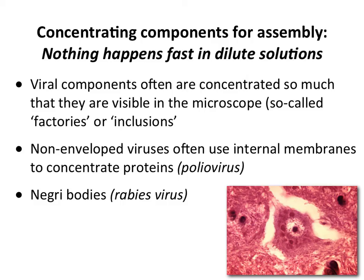Here on the lower right is an example of such an inclusion body — a neuron from an individual unfortunately infected with rabies virus. The cytoplasm of this cell has very distinct round structures; these are factories where rabies virions are being assembled. You want to concentrate all the components in one place so reactions go faster. In many cases these inclusion bodies form something you can see in a light microscope. They are called Negri bodies, and if you see Negri bodies in a neuron it's quite likely that individual has rabies.